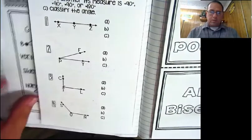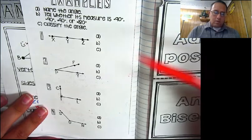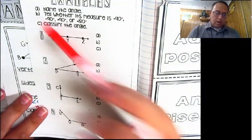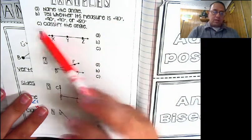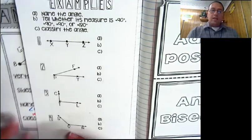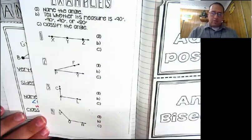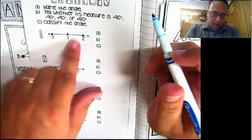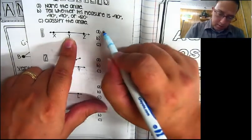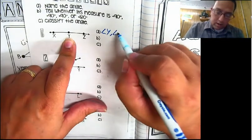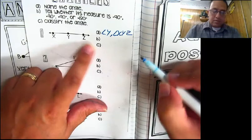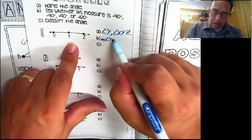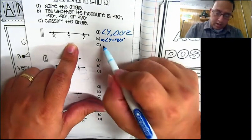Pause the video and answer these four questions: name the angle, tell whether the measure is less than 90, greater than 90, equal to 90, or equal to 180, then classify the angle. The first angle: I could call it angle Y, or angle XYZ, or angle ZYX - any of those is good. The measure of angle Y: this is a straight line, so it equals 180 degrees, and it is a straight angle.